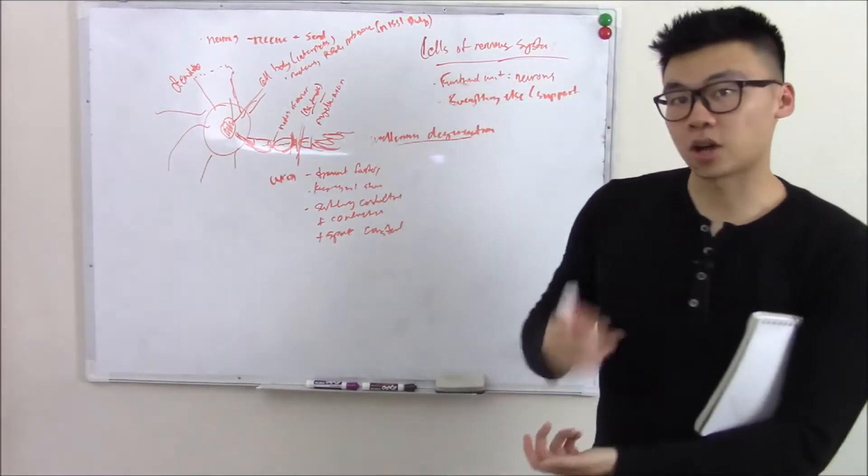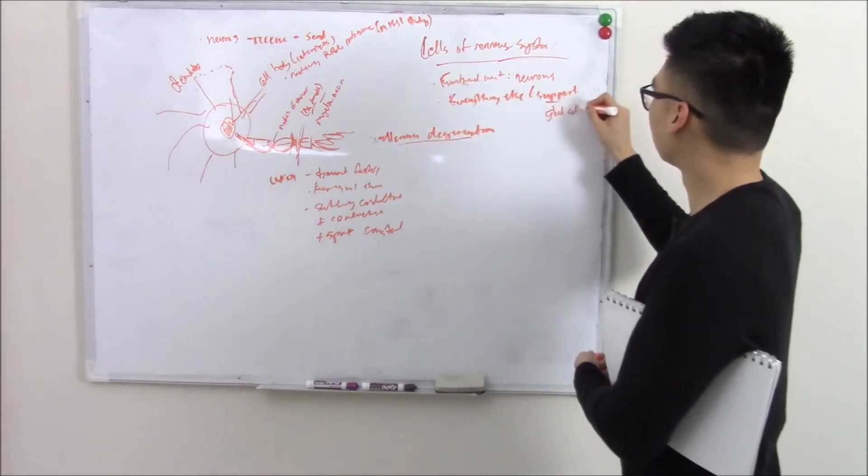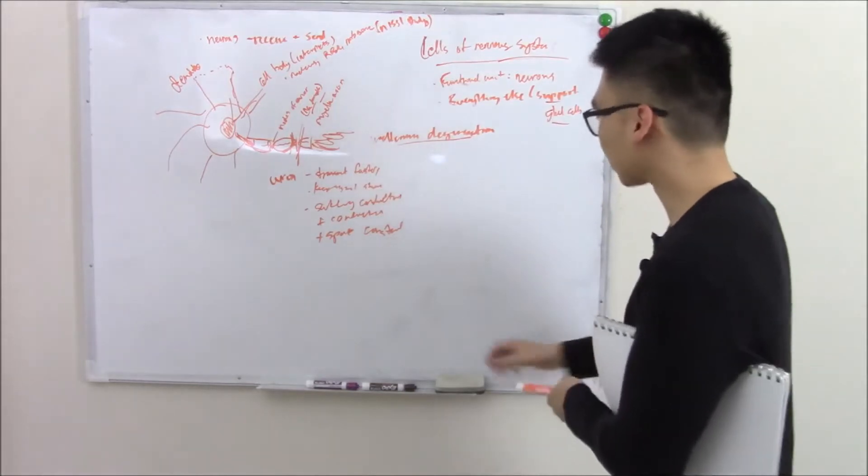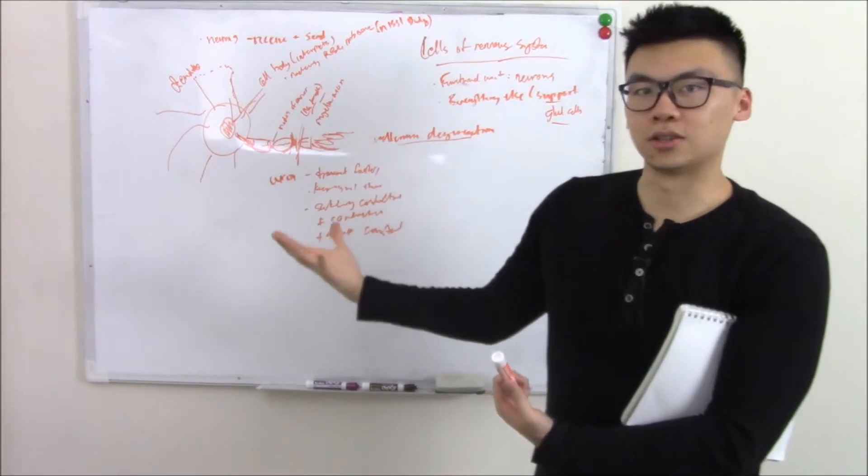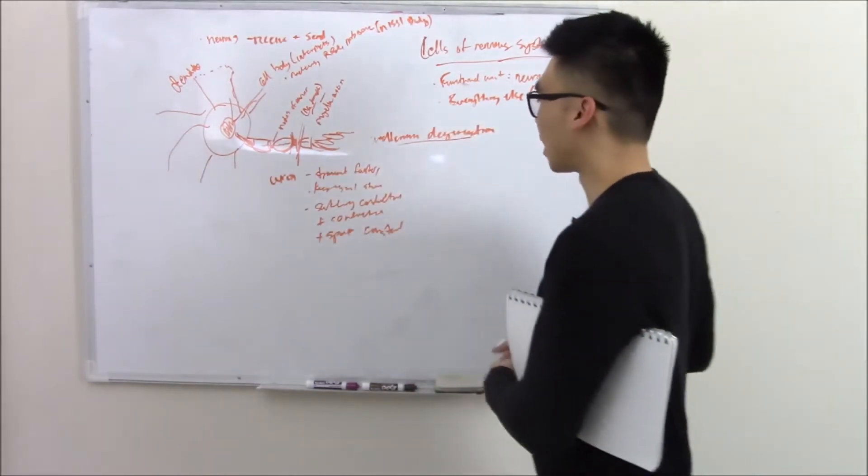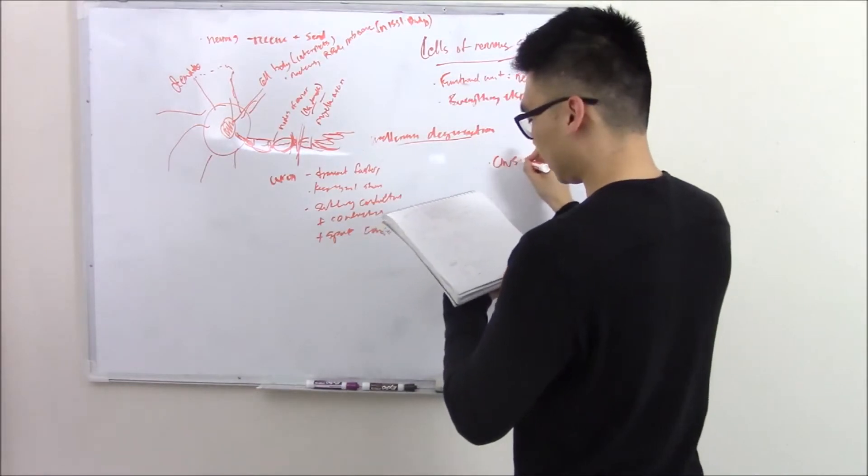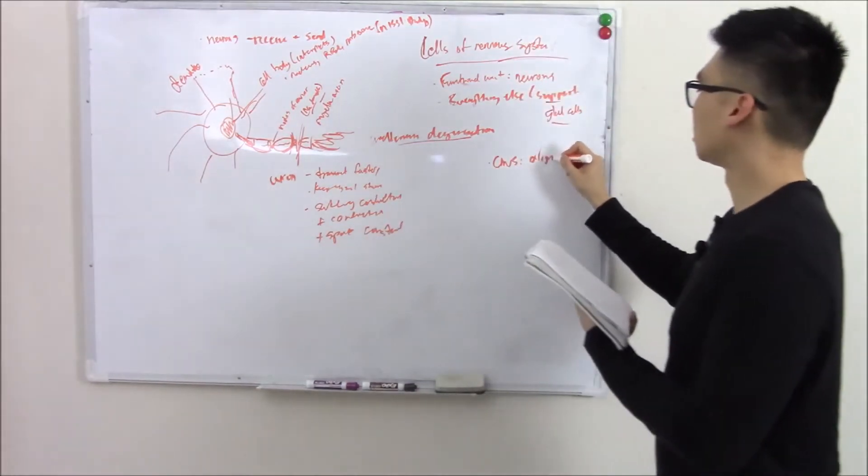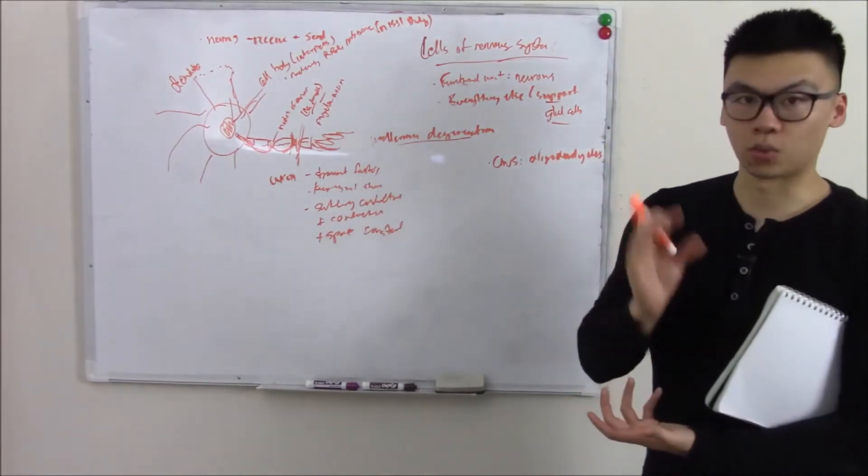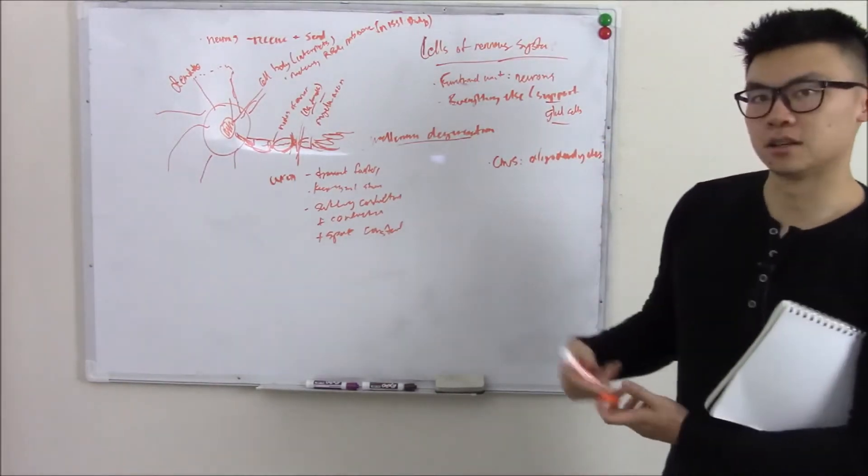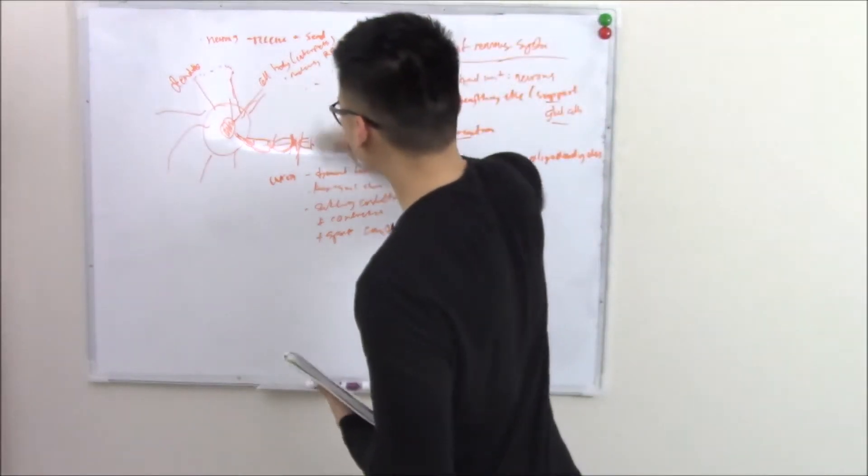So those are your neurons. Let's talk about your support cells, your glial cells. Can't talk about support cells without talking about the cells that make the myelin - that's so important in neurons. In the CNS, these are your oligodendrocytes. And if you look in the CNS, there's white matter and gray matter. The white matter - a lot of the white matter is made of these oligodendrocytes. And these cells will make the myelin of your CNS.